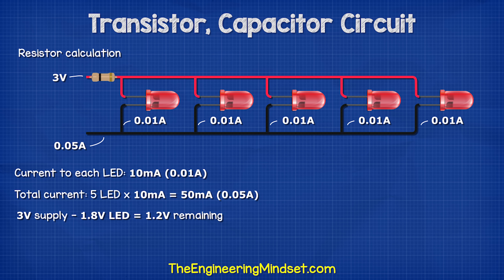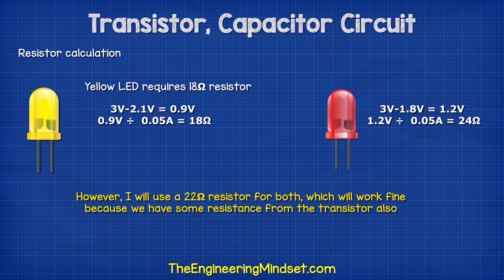Three volts from the battery subtract the 1.8 volts of the LED leaves us with 1.2 volts, which we need to remove. So 1.2 volts divided by the total current of 0.05 amps equals 24 ohms — that means the resistor we need is 24 ohms. I don't have any 24 ohm resistors, so I will instead use a 22 ohm resistor, which will work fine for this application. The yellow LED will require a slightly higher resistor, but the 22 ohm will work fine for this project.